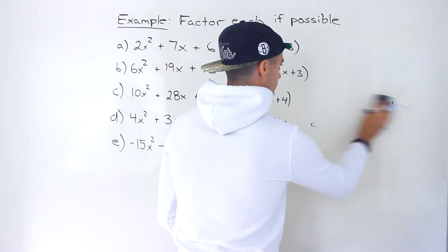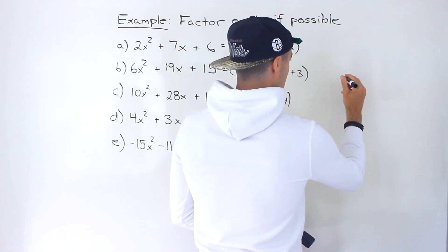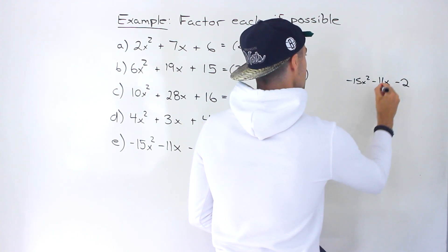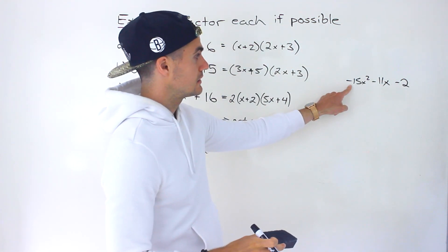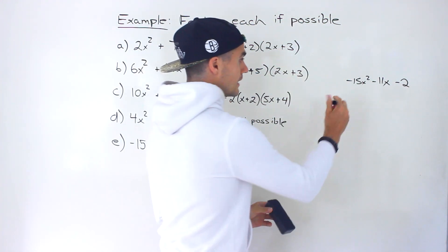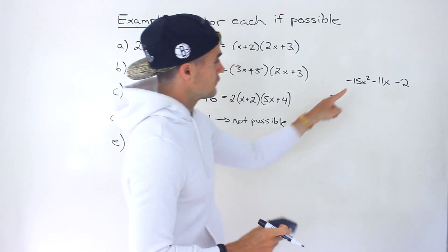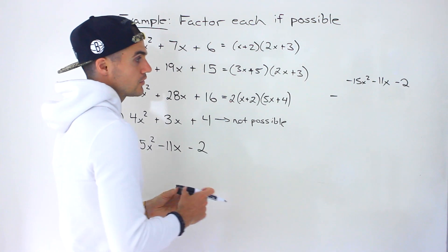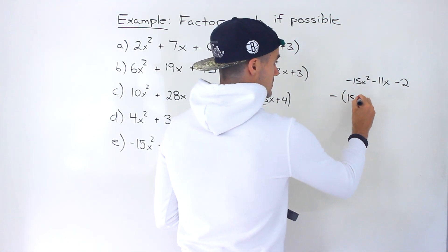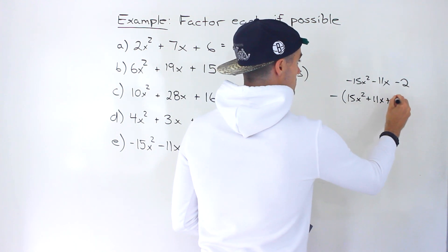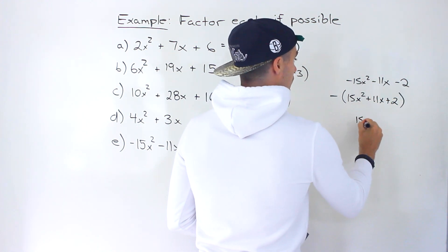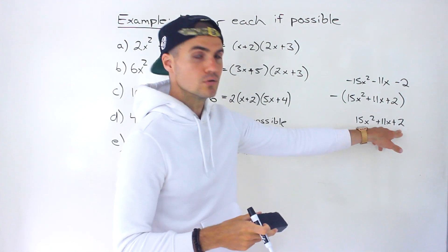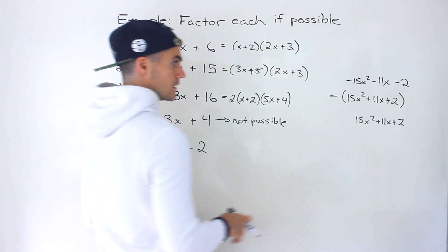Now part E, last one. We got -15x² - 11x - 2. I mentioned this at the beginning of the video. Because the leading coefficient is negative, we're definitely going to take out a negative 1 for sure. Between 15, 11, and 2, no number is a common factor between those. We're actually just going to take out a negative 1. We'd end up with 15x² + 11x + 2. Notice that this quadratic follows the same pattern as the other quadratics where that B value and that C value is positive.